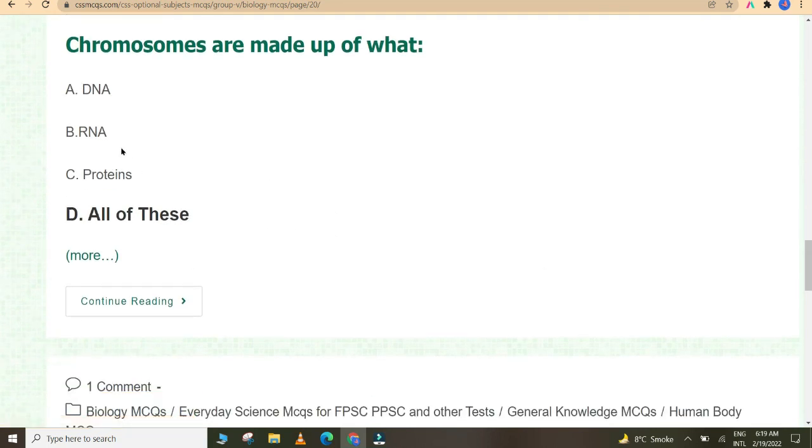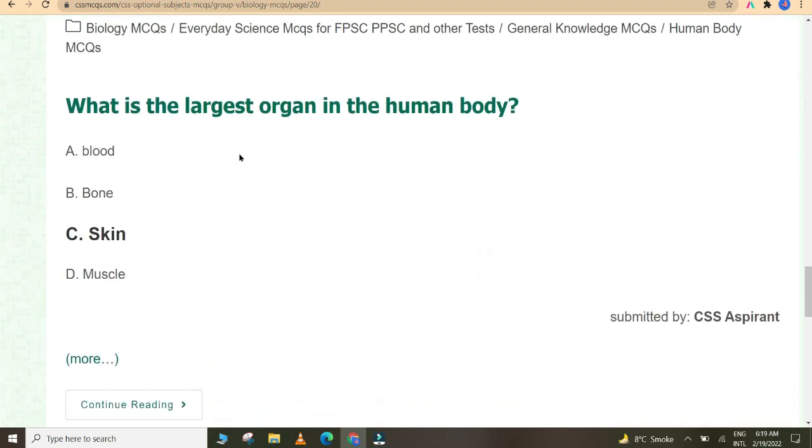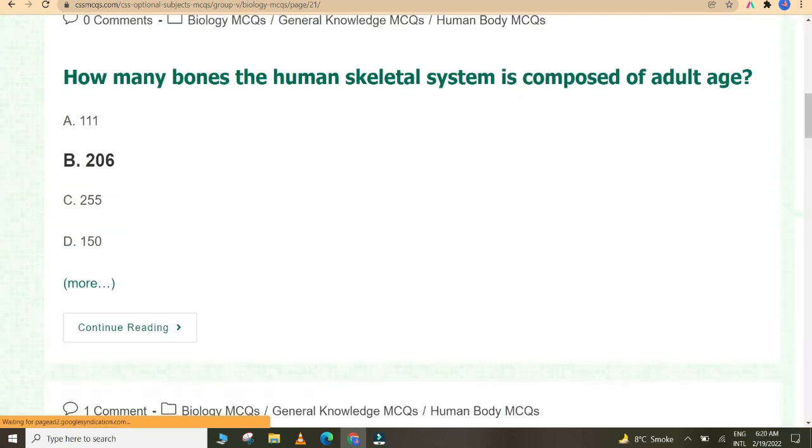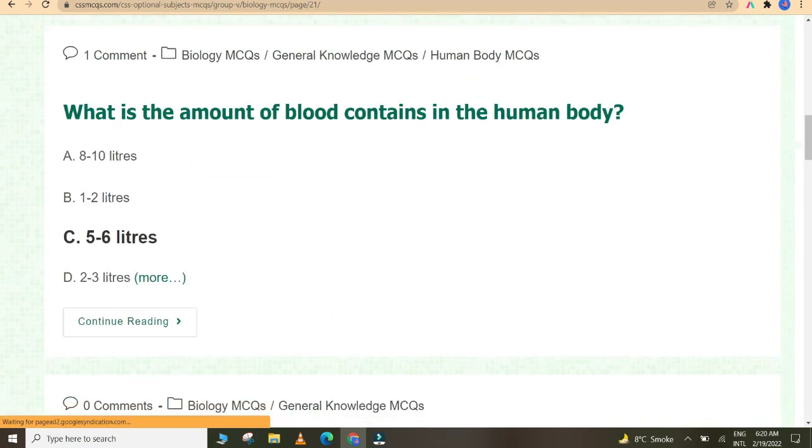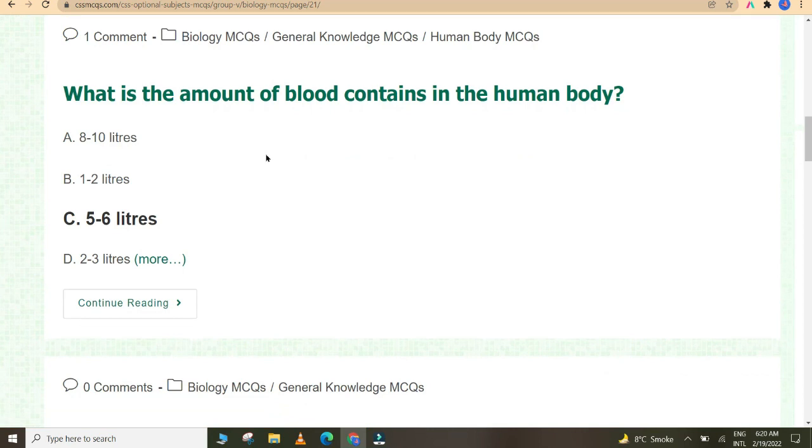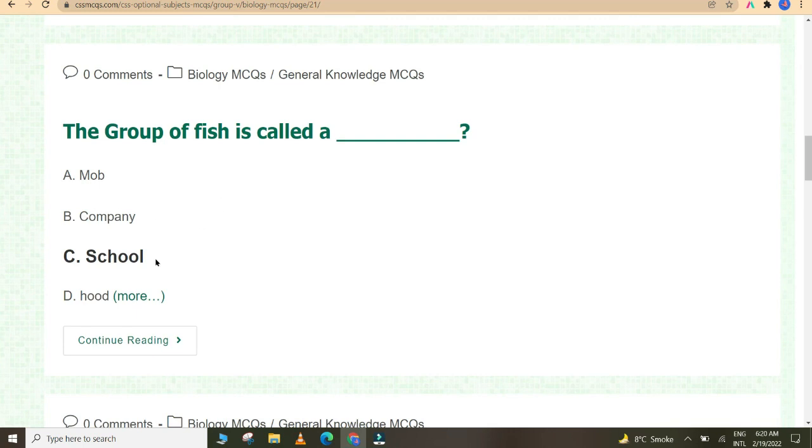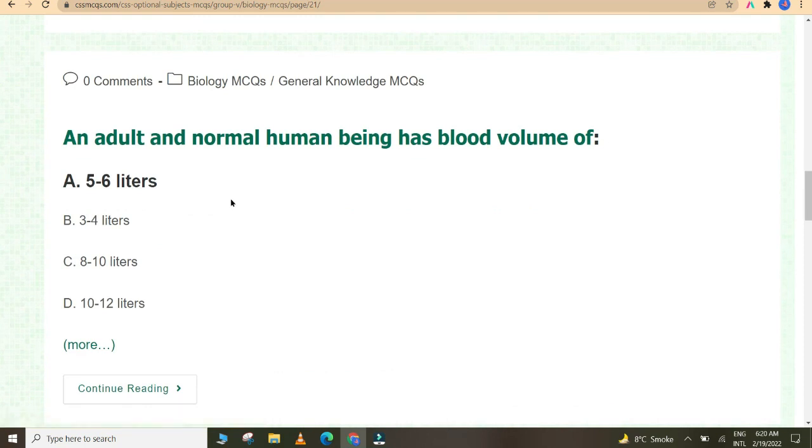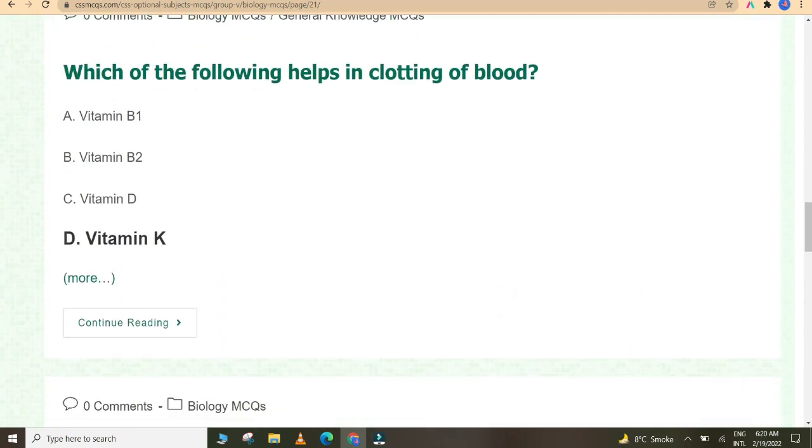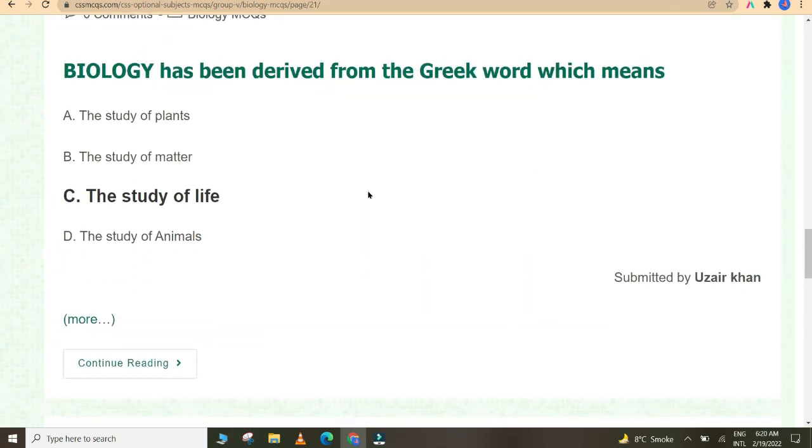The main function of the kidney is to remove waste product from the body. Which of the following helps in clotting of blood? Vitamin K. Chromosomes are made up of DNA, RNA, and proteins. What is the largest organ in the human body? Skin. How many bones is the human skeletal system composed of in adult age? 206. What is the amount of blood contained in the human body? Five to six liters. The group of fish is called a school. An adult and normal human being has blood volume of five to six liters.